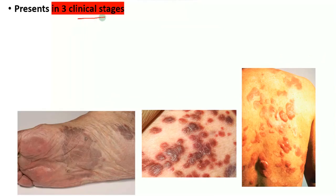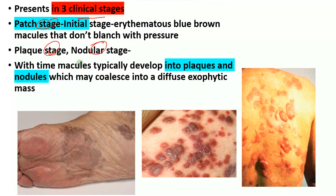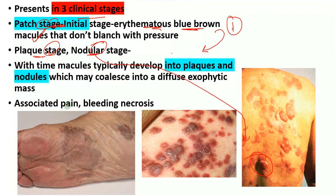Kaposi's sarcoma presents in three clinical stages: the patch stage, the plaque stage, and the nodular stage. In the patch stage, you see blue-brown erythematous macules that don't blanch with pressure. Progressively this advances to the plaque stage and the nodular stage, which may coalesce together to form diffuse exophytic masses and painless tumour nodules, sometimes associated with pain, bleeding, and necrosis.